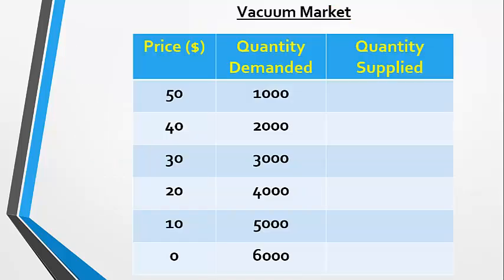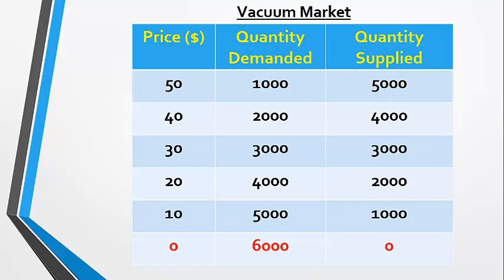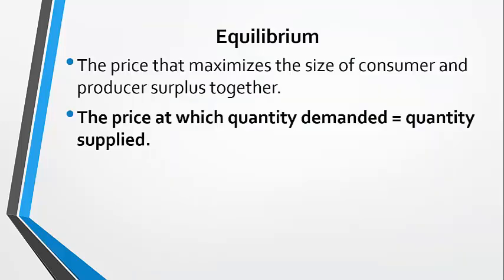Let's look at the market for a particular vacuum. Here you can see how many units consumers are willing to buy at given prices, and how many units are supplied at those prices. At $50, producers are willing to make a lot of vacuums, but not very many consumers are willing to pay $50, so you'd have a huge surplus sitting there — the price needs to come down. At $0, plenty of people would love a free vacuum, but producers can't supply any, so there's a large shortage and the price needs to go up. Eventually the market will find the right price at which quantity demanded exactly equals the quantity sold — $30 is that price. That's another good definition for equilibrium: the price at which quantity demanded is exactly equal to quantity supplied.